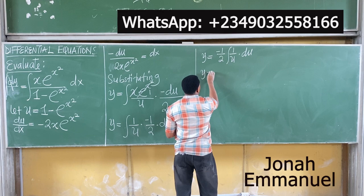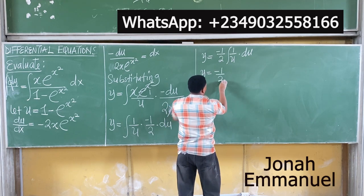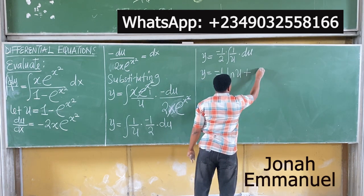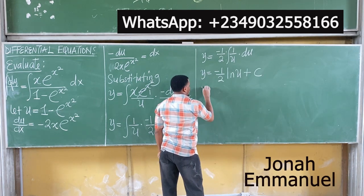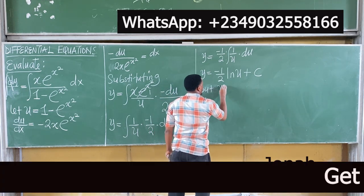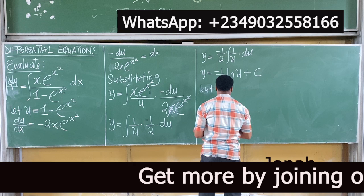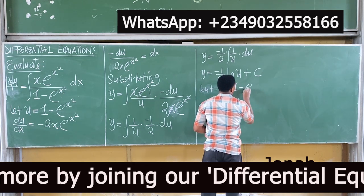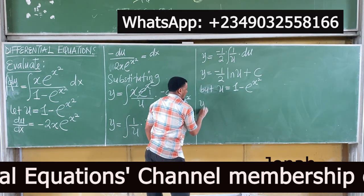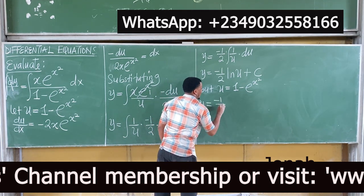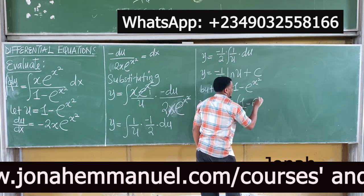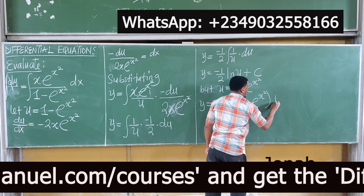From here, y is equal to minus 1 over 2 times ln(u) plus c. Substituting back the value of u — u equals 1 minus exponential x squared — the answer becomes y equals minus 1 over 2 times ln(1 minus e^(x squared)) plus c.